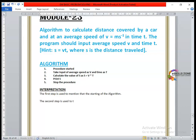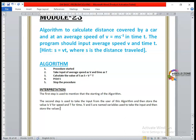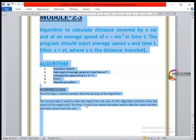The second step is used to take the input from the user of this algorithm and then store the values in V for speed and T for time. V and T are named variables used to take the input and then store the values from the user. So these two variables will first take the input from the user and then store the values in these variables.